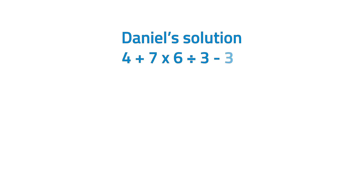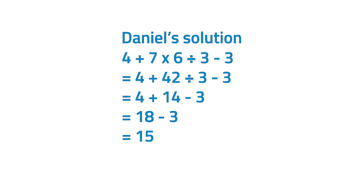Now let's take a look at Daniel's solution. Unlike Darwin, Daniel started first with multiplication then division. He brought down 4 and multiplied 7 by 6. 7 times 6 is equal to 42. Then he divided 42 by 3. 42 divided by 3 is equal to 14. Then he added 4 and 14. 4 plus 14 is equal to 18. Lastly, he subtracted 3 from 18. 18 minus 3 is equal to 15. Daniel's answer is 15.